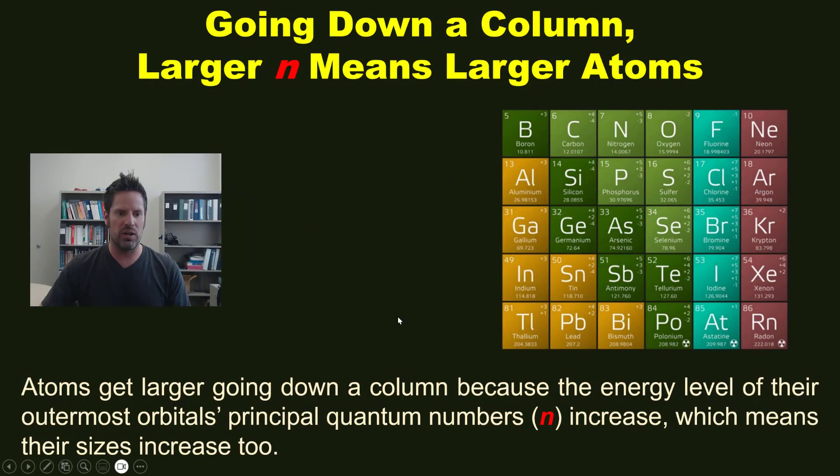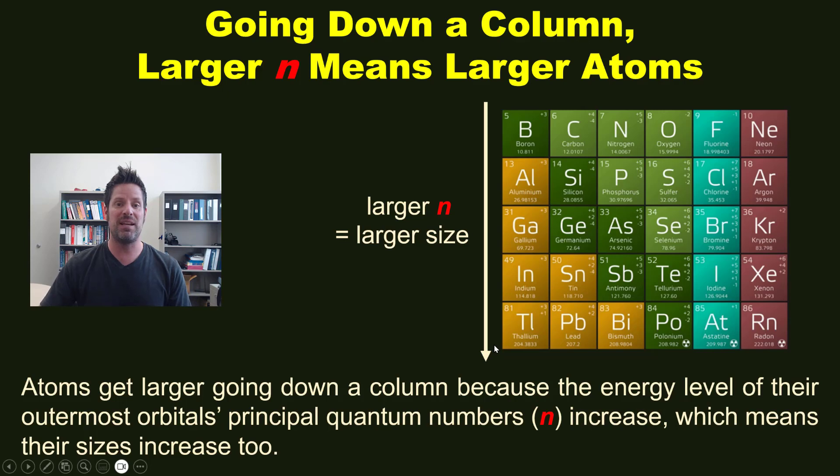Separately, we also learned that atoms get larger as you go down a column on the periodic table. The reason for this is because the energy level of their outermost orbital's principal quantum number or n increases, and larger n equals larger orbital and hence larger size. Make sense? Good.